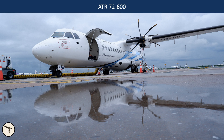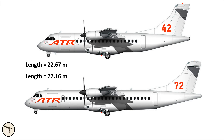The most distinct difference between the 42 and the 72 is the size. The 72 is 4.5 meters longer than the 42, and the wingspan is 2.5 meters wider.